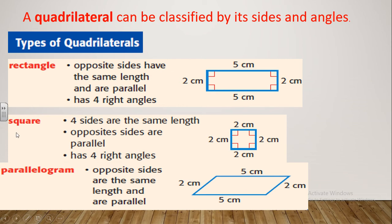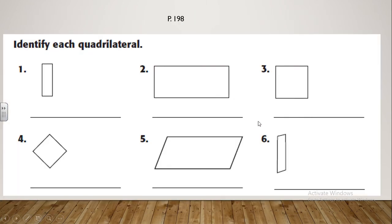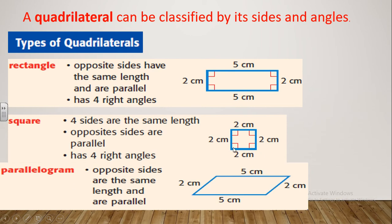The next one is a square. The four sides of a square are equal in length, so all four sides are equal. Each two opposite sides are parallel — parallel means they never meet. And the four angles are right angles.